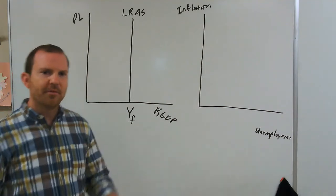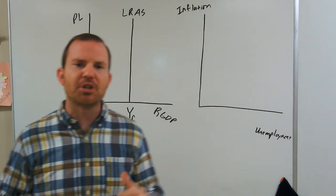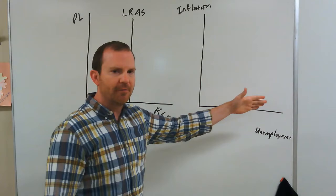Hey everybody, what we're going to talk about now is what's called the long-run Phillips curve. In class we talked about the short-run Phillips curve, which shows you the short-run trade-off between unemployment and inflation. When one is high, the other tends to be low — when unemployment is high, inflation tends to be low and vice versa. So we get a negatively sloping short-run Phillips curve.